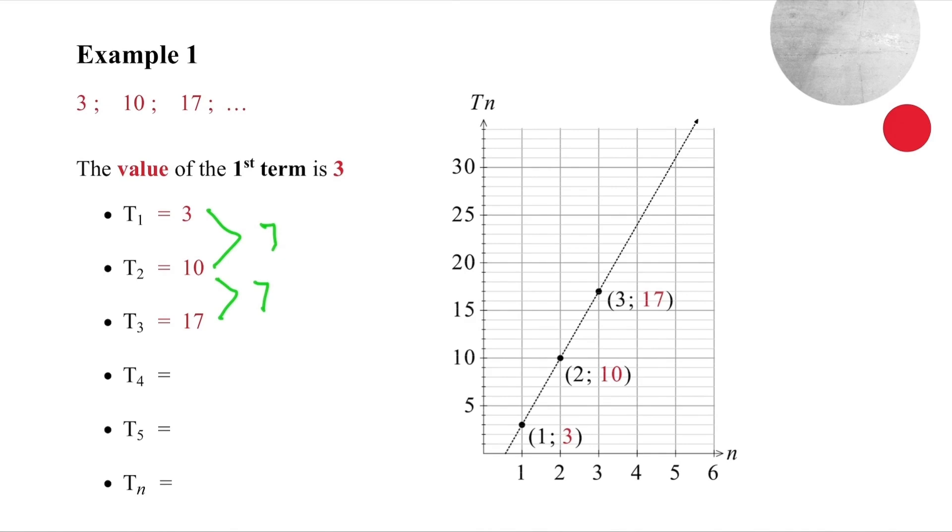Because of this, we can generate subsequent terms as long as we know the preceding term. So we can add seven to 17 to get 24. And again, we can add seven to 24 to get 31.